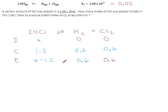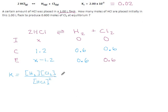We have equilibrium amounts for everything and we know the equilibrium constant, so we can write our K expression. Products are hydrogen and chlorine; reactant is hydrogen chloride, which had a coefficient of 2, so it's squared in the denominator. Plugging in numbers: hydrogen is 0.6, chlorine is also 0.6, so I'll write (0.6)²; hydrogen chloride is (X − 1.2)², also squared. And we know K = 0.02.